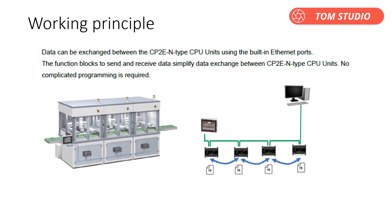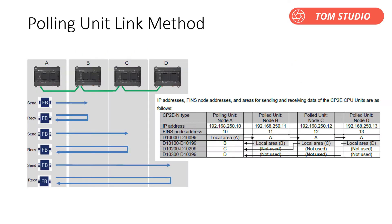No complicated programming is required. A maximum of one CP2E can communicate with up to three other CP2E CPUs, because the FINS protocol in micro PLCs has a three-device limitation when using TCP protocol — please be aware of that. This is called the polling unit link method, and as shown in the example, you can easily use function blocks to implement data exchange between PLCs.